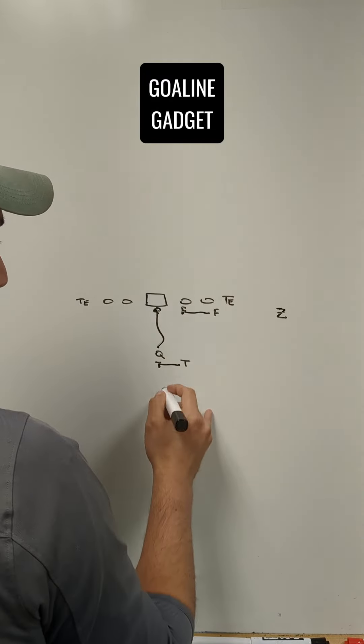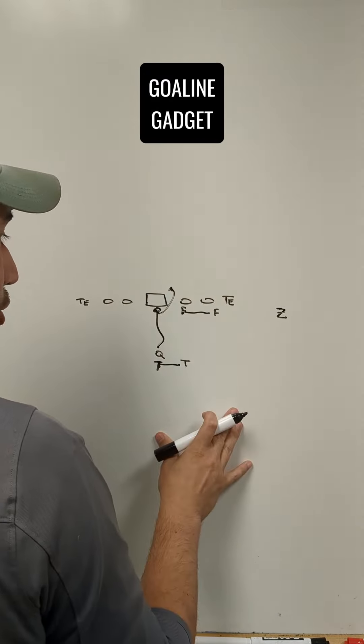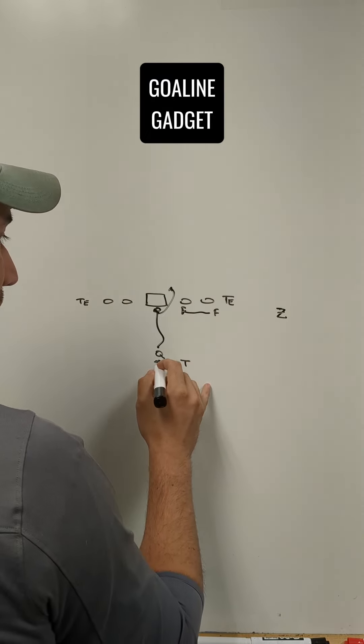Then we had the center snap the ball through the quarterback's legs to the tailback. And the quarterback acted like he was keeping it on a QB sneak. But the ball had been snapped through his legs to the tailback. So the tailback now had the ball.